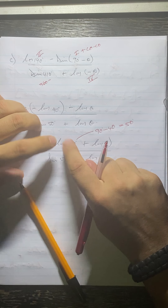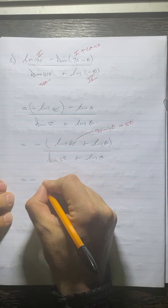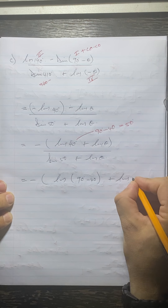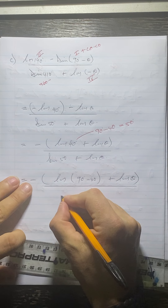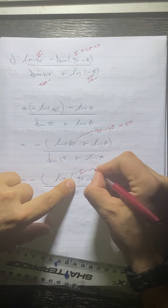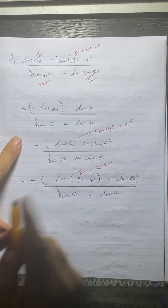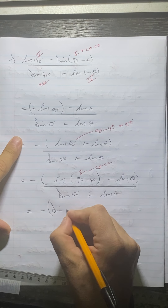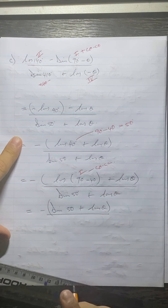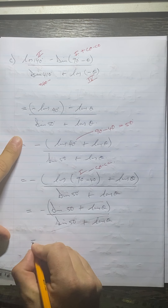So what I'm going to do is change cos 40 to be sine by using the co-function. This becomes minus cos of 90 minus 40, which is minus sine 50, plus cos theta, all over sine 50 plus cos theta. The entire bracket sine 50 plus cos theta cancels with the denominator, and we are left with minus 1.